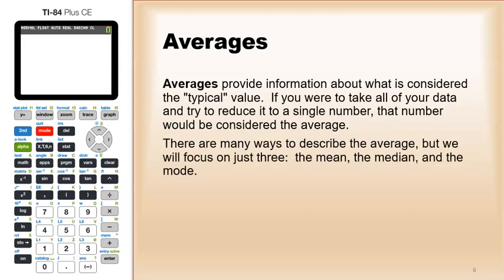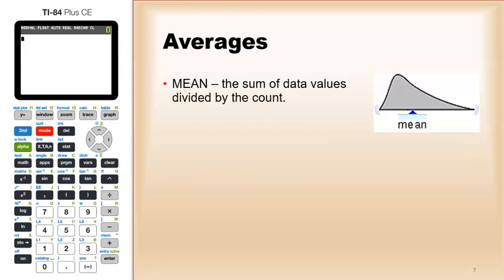The mean is what we typically think of as average. In common use, the word average generally means the mean. What the mean is is that you add up all your data values and divide by the count. As far as graphs go, the mean is basically the balancing point.